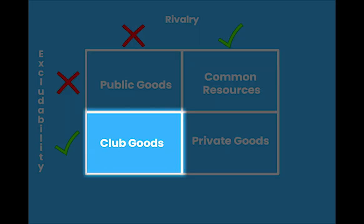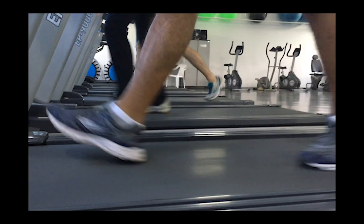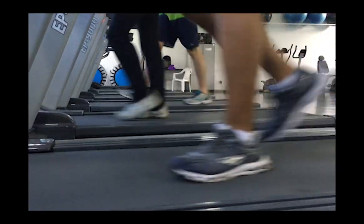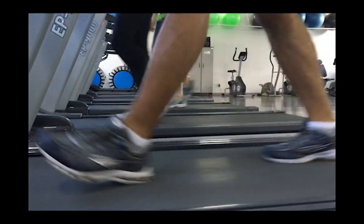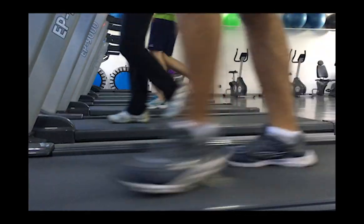Finally, we have club goods. Club goods refer to all goods that are excludable but non-rival. This means individuals can be prevented from consuming them but they can be used by multiple people or groups of people at the same time. Some examples of club goods include products such as gym memberships, cable television, or Wi-Fi.